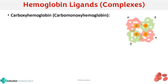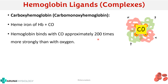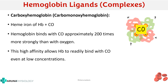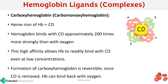Carboxyhemoglobin, otherwise called carbomonoxyhemoglobin, is formed when hemoglobin combines with carbon monoxide — the heme part combines with carbon monoxide. Carbon monoxide has approximately 200 times more affinity to hemoglobin than oxygen, which is why even at low concentrations carbon monoxide will immediately bind with hemoglobin — this is the cause of carbon monoxide poisoning. The formation of carboxyhemoglobin is reversible: once carbon monoxide is removed, hemoglobin can bind back with oxygen. In carbon monoxide poisoning, we must remove the carboxyhemoglobin first so oxygen can bind and resume transport.